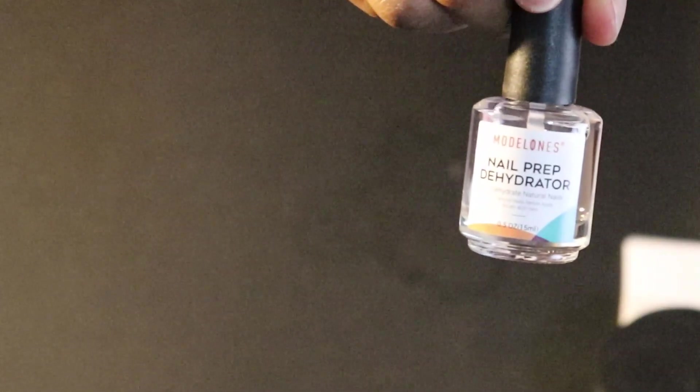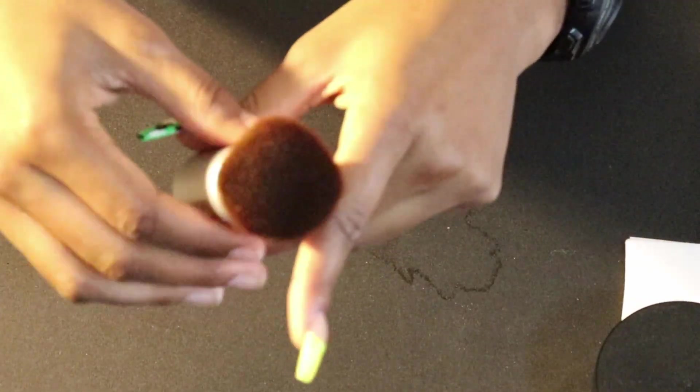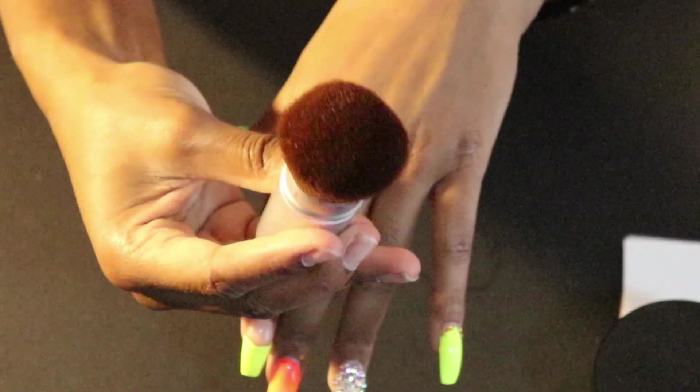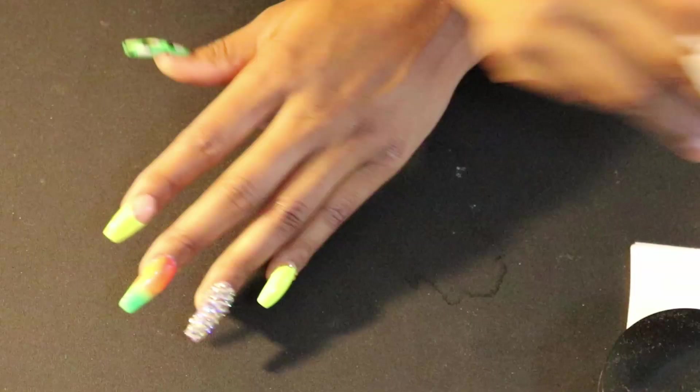I'm also using this Model Ones nail dehydrator and primer. FYI, the primer smells really bad. I'm also going to use this makeup brush just to dust away any dust, as well as some nail forms since I'm not going to be using tips today.